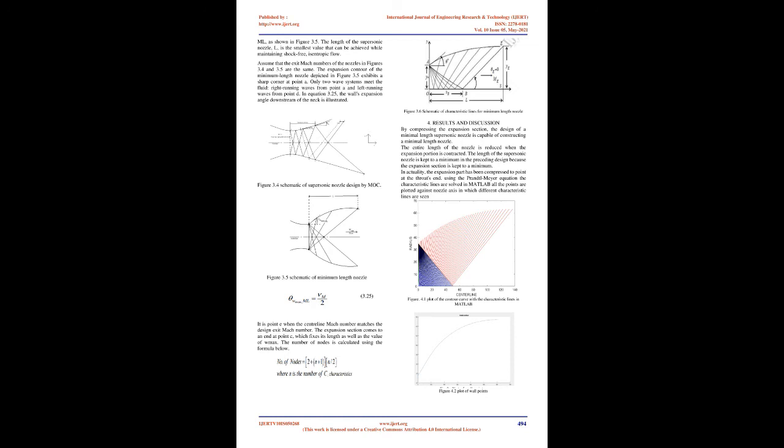Assume that the characteristics are straight line segments connecting the grid points, with average slopes. C+ characteristic across the first point is drawn as a straight line with an average slope angle. As indicated in the equation below, the C- characteristic across the second point is drawn as a straight line with an average slope angle.